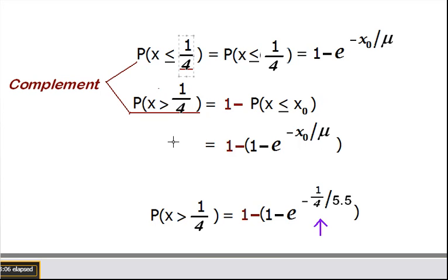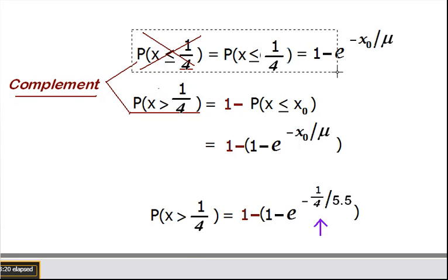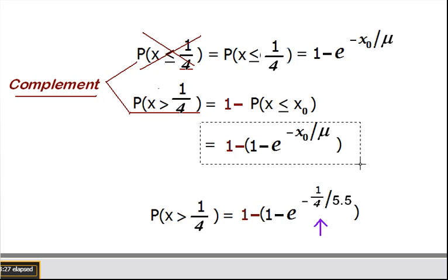So in our formula, if I substitute it and put one-fourth, we would be finding the wrong probability. What we have to find is the complement. So if we find the probability of x less than or equal to one-fourth, we just simply use the complement to find if it's greater than. So I'm going to take our formula and subtract it from one.